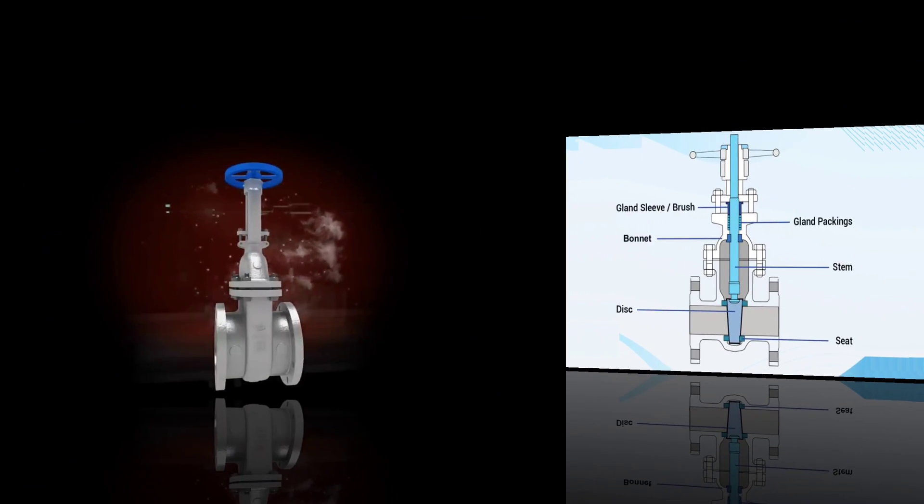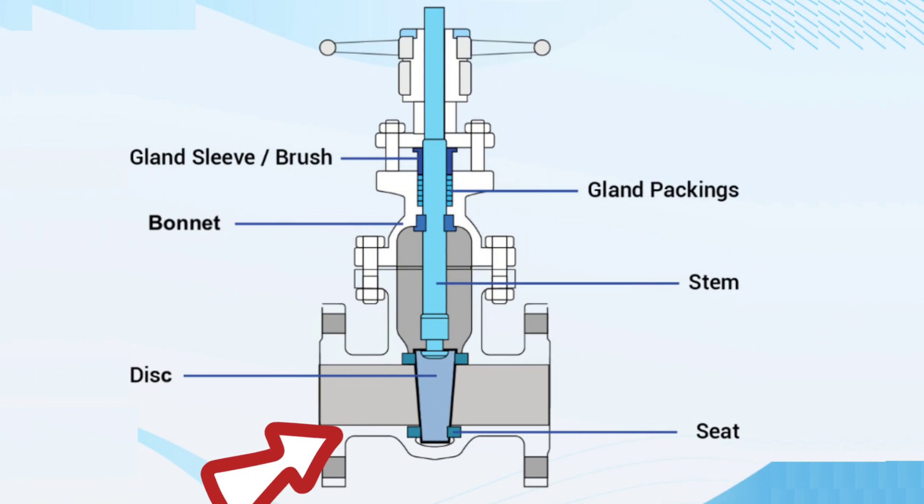A gate valve consists of a valve body, seat, disc, bonnet, gland packings, gland sleeve or bush, and a wheel for operating the valve.